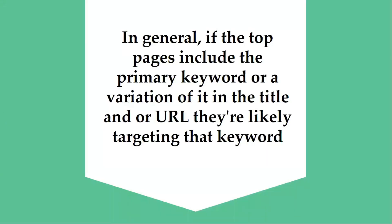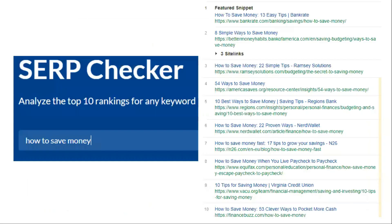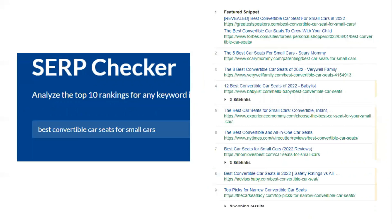In general, if the top pages include the primary keyword or a variation of it in the title, they're likely targeting the keyword. For example, all of the top ranking pages for the query 'how to save money' are exactly about that. Whereas a query like 'best convertible car seat for small cars' gives a bit of a mixed response from search intent. Some pages have gone specifically with the angle of small cars, and as a result, they're probably matching searcher intent better than the broad posts about the best convertible car seats for any car. This is a sign of weakness in the SERP because it means there's a probability that a lack of rank-worthy content may be out there.